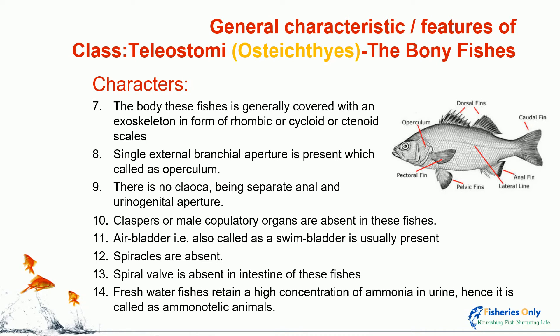Fourteenth character: freshwater bony fishes have a high concentration of ammonia in urine due to the osmoregulation process. Hence they are called ammonotelic animals, because the concentration of ammonia in urine is high.